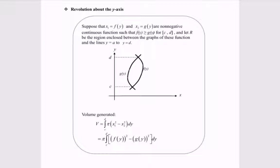Revolution about the y-axis. Suppose x sub 1 is equal to the function f(y), and x sub 2 is the function g(y), a non-negative continuous function, such that f(y) is greater than or equal to g(y) for the limits c to d. Let R be the region enclosed between the graphs of these functions and the lines y equals c to y equals d.